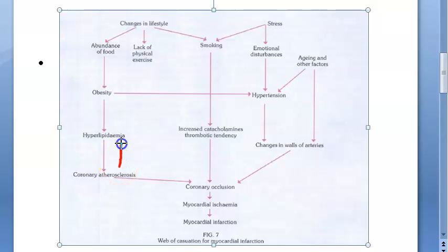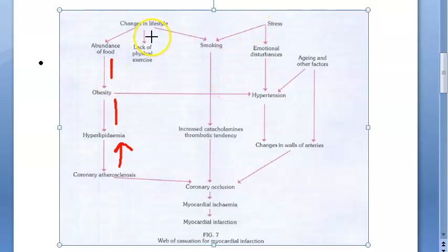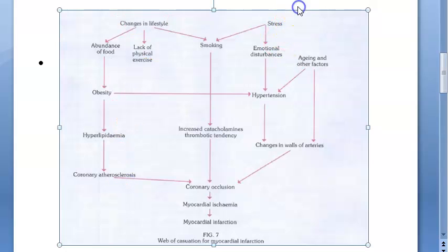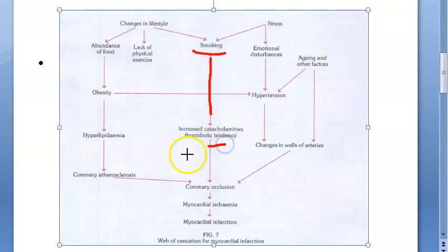Why is there atherosclerosis? Because of hyperlipidemia, because of obesity, abundance of food — basically lifestyle. People are eating too much with no physical exercise, leading to obesity, then hyperlipidemia, then atherosclerosis.